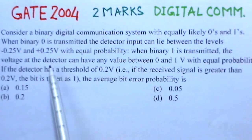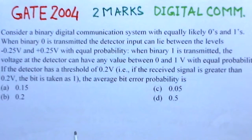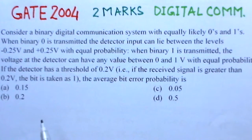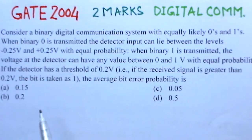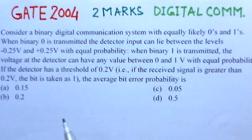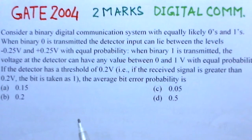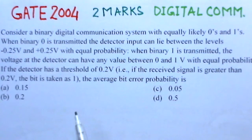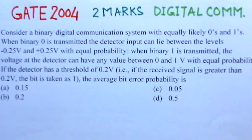Firstly, there is a digital communication system which has equal likelihood for occurrence of 0 and 1 — that means there is no difference in probability for 0 and 1. For bit zero, detector input is between minus 0.25 and plus 0.25 volts. For bit one, detector input is between 0 and 1 volts. The threshold is given as 0.2 volts — if detector input is greater than 0.2 volts, bit one is detected.